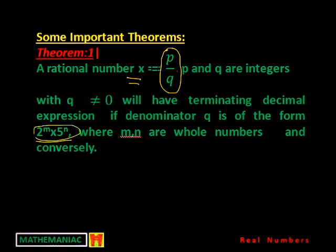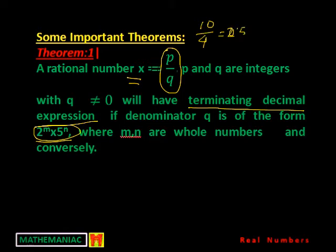This particular form implies that the denominator should have only 2 or 5 or maybe both as factors — no other factors. Then only this type of numbers will have a terminating decimal expression. Terminating decimal expression means — I already have taken examples — like 10 by 4, we will have terminating decimal expression because this is 2.5, meaning the division finishes after certain steps. Whereas non-terminating means if you go on dividing, it will never come to an end. So we are categorizing these numbers with the help of this theorem.